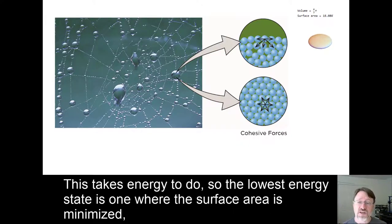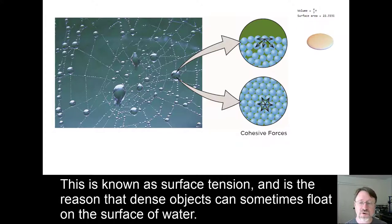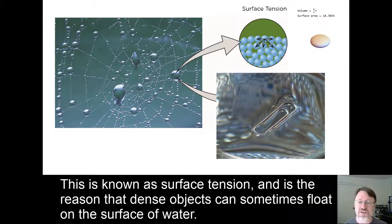So the lowest energy state is one where the surface area is minimized, and there is a tension at the surface drawing the droplet into the shape that minimizes its surface area. This is known as surface tension and is the reason that dense objects can sometimes float on the surface of water.